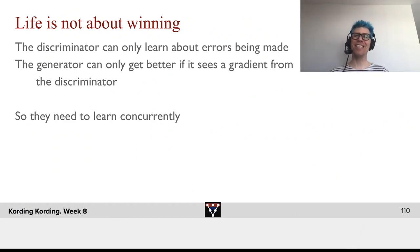So now we see that life isn't all about winning. The discriminator can only learn about errors being made. And the generator can only get better if it sees a gradient from the discriminator. So they both need to learn concurrently.